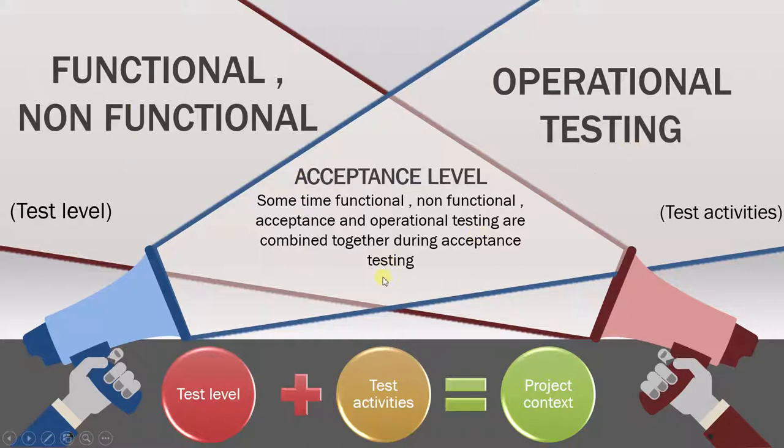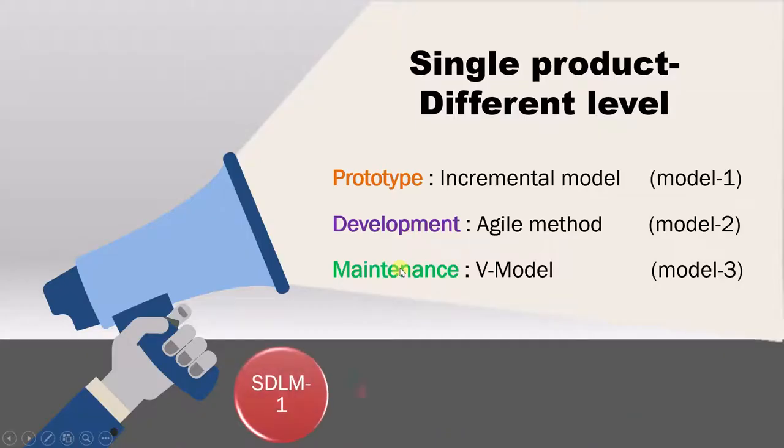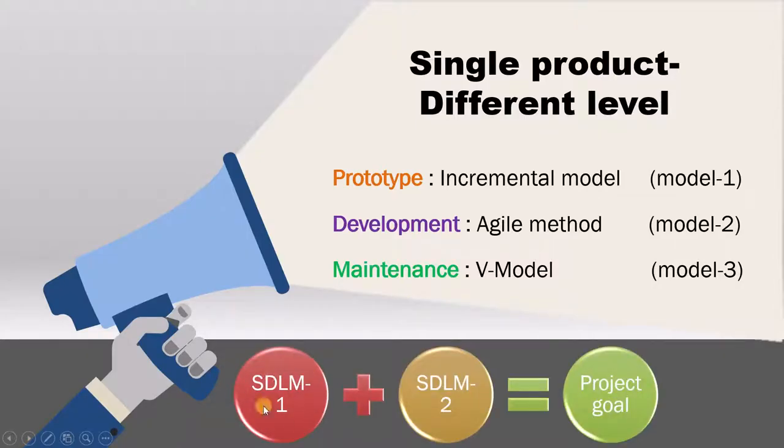Now we take a look at a different model. Here we have two models of software development lifecycle, model 1 and model 2. We are not combining test levels and activities here, but two software development models in order to achieve the project goal. Now suppose the product is in the prototype state.